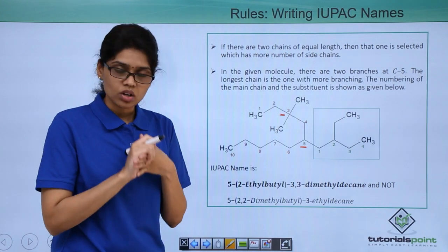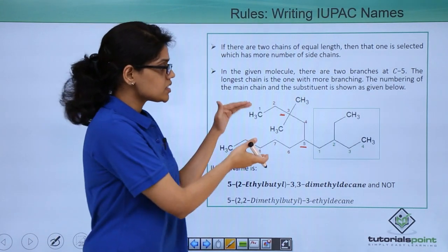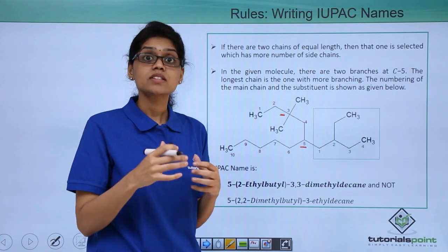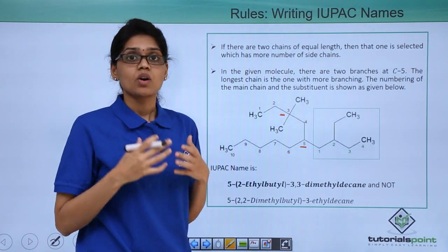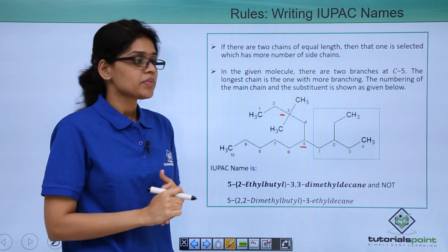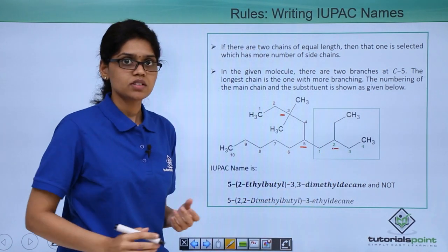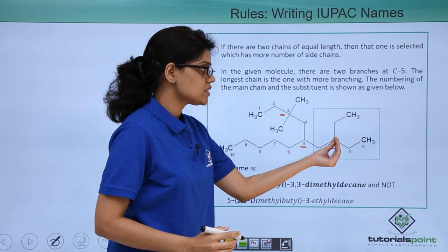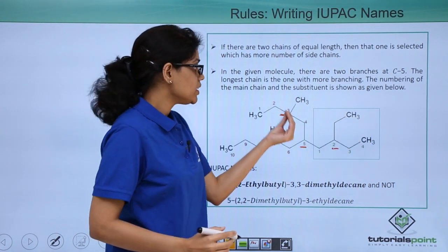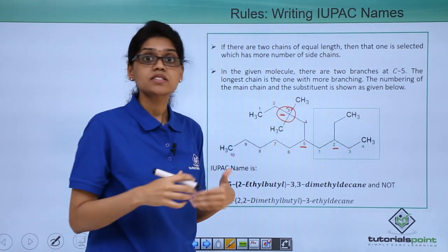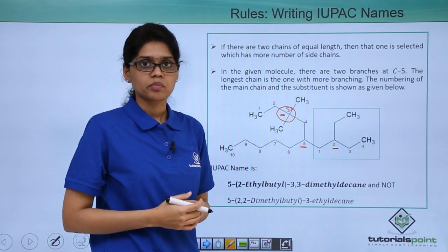In this case you must always take note that that chain or that side chain will be taken as your parent chain which has more number of branching. Now how do we determine more number of branching? We saw that in both the cases branching is happening at the 3rd position and if you look at this side you can see that it is an ethyl group. But here you have 2 methyl groups that means this particular carbon has more branching as compared to this particular carbon.